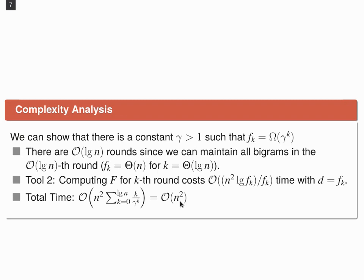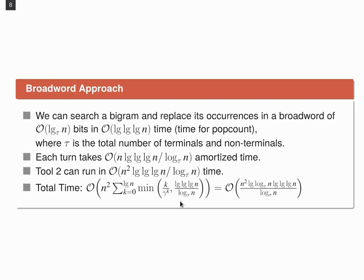Now, the nice thing is that all these techniques work within a broadword approach. We can search a bigram and replace its occurrences in log tau n bits within log log n time, where this time comes from the pop count function. And tau is again the total number of terminals and non-terminals. Each turn takes within this concept n times the time for the pop count function, divided by the benefits for the broadword search, amortized time.